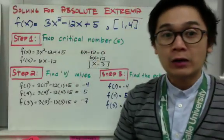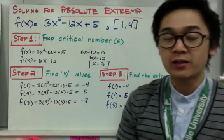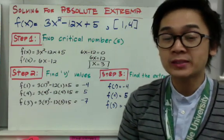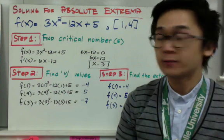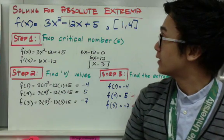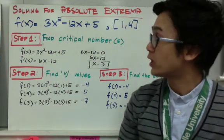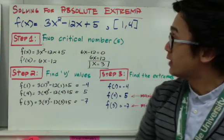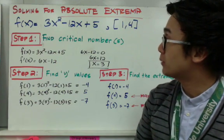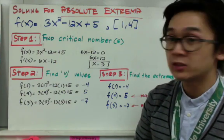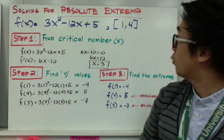How do you solve for the absolute extrema of a given function? There are three steps to remember when finding the absolute extrema. For this problem, we have f of x equal to 3x squared minus 12x plus 5 on the closed interval 1, 4.